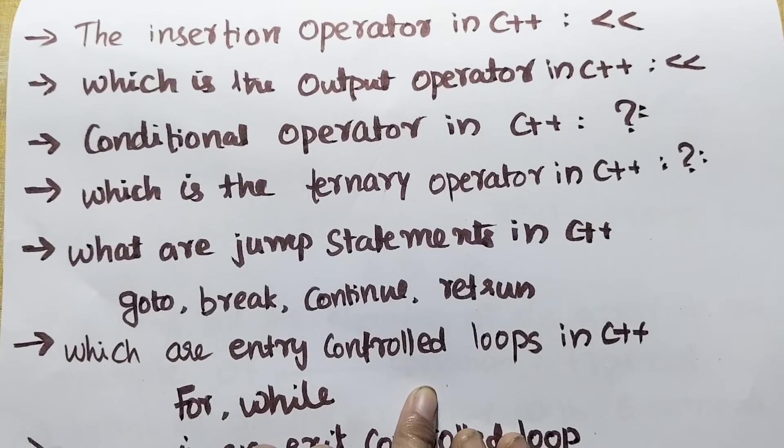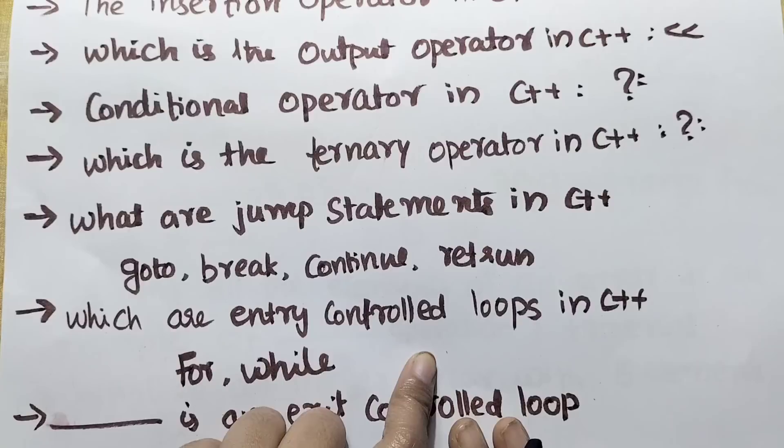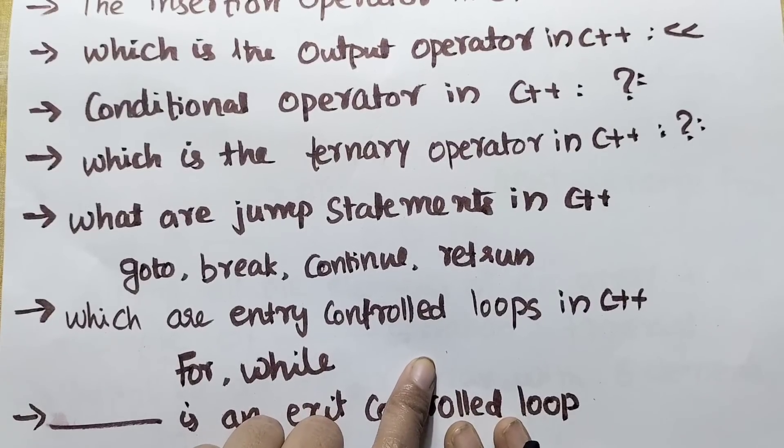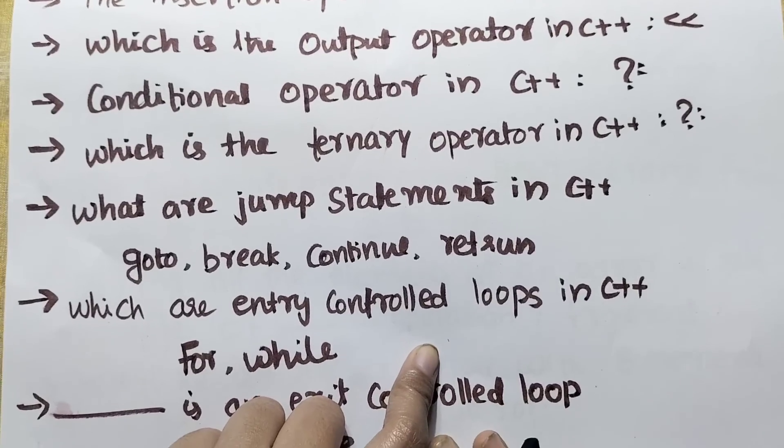What are the jump statements in C++? The jump statements are: go to, break, continue, and return.